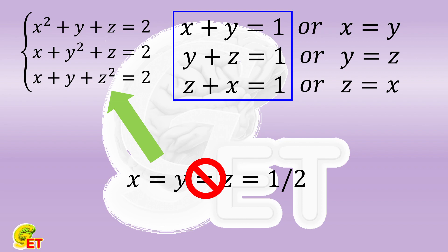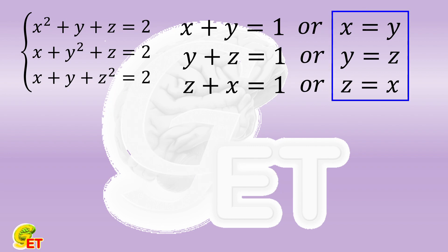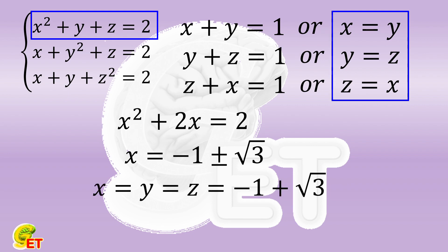The second extreme case is that, out of the three groups of conditions, we choose all those on the right. Bringing them into one of the original equations, we get a quadratic equation in one variable. This equation is very easy to solve, so we find two sets of solutions. Namely, x, y, and z are all equal to minus 1 plus the square root of 3, and all equal to minus 1 minus the square root of 3.